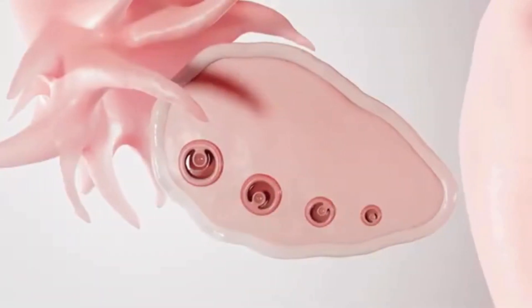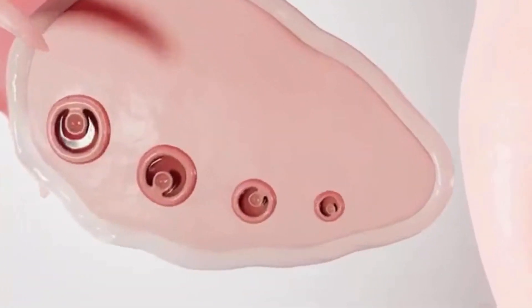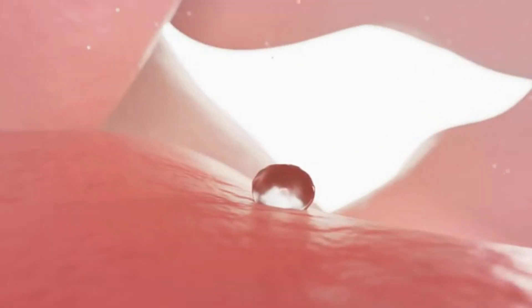The follicular phase lasts around 7 to 10 days. The follicle is a hollow ball of cells containing an immature egg at its center. During this phase, the follicle grows, nourishing the egg within.